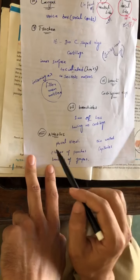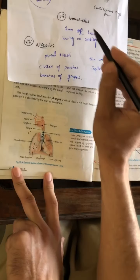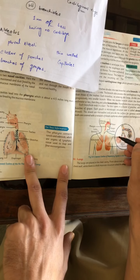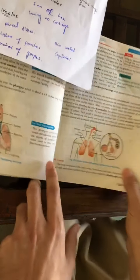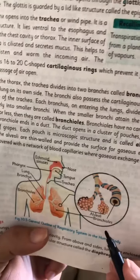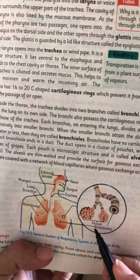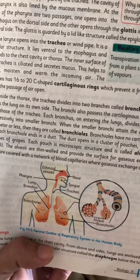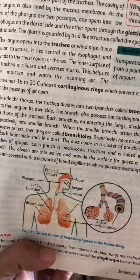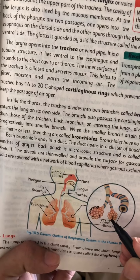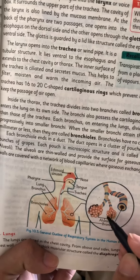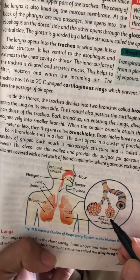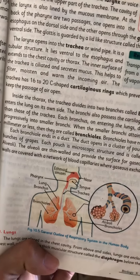The next one is known as alveolus. Bronchioles are branch-like structures. These lungs open into grape-like structures. These are the grape-like structures which are called alveoli, meaning the plural is alveoli.